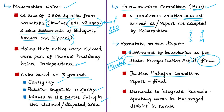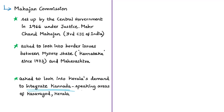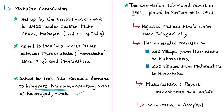One of the important responses of the Union Government to the border dispute was the Mahajan Commission, established in 1966 due to sustained pressure from Maharashtra. The commission was set up under former Chief Justice of India Justice Meher Chand Mahajan — the third Chief Justice of India. It was asked to look into border issues between the Mysore state and Maharashtra, and also into Karnataka's demand for integration of Kannada-speaking areas in Kasaragod, Kerala.